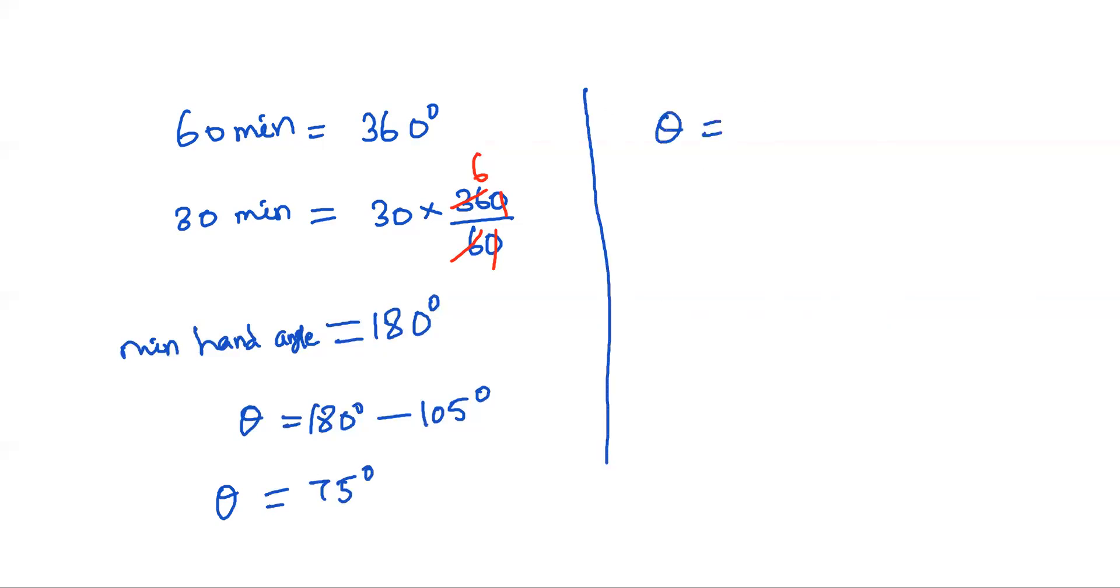Theta is equal to 75 degrees into pi by 180 degrees. If you cancel, dividing by 5, we get 15 and 36. Again, you can cancel by 3, so you will get 5 and 12. Therefore, theta is equal to 5 pi by 12 radians.